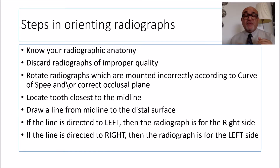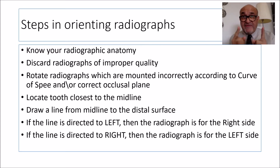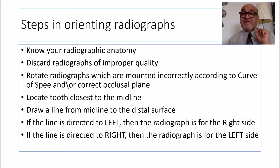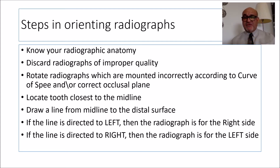After locating the midline, you draw an imaginary line or arrow extending from the area closest to the midline posteriorly. If this line extends towards your left, then this radiograph belongs to the right side of the patient. On the other hand, if the line drawn from the midline posteriorly is directed towards the right, then the image belongs to the left side of the patient.